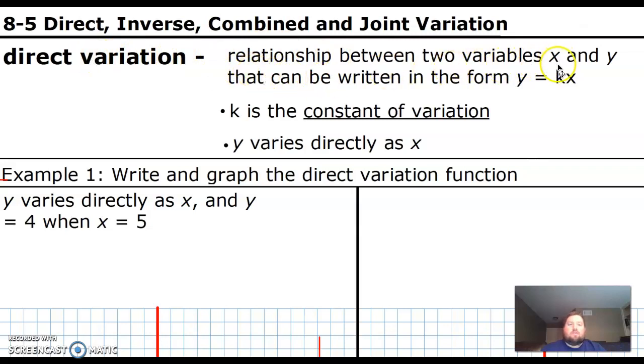So direct variation is a relationship between two variables that can be written in the form y equals kx. That equation is very important. We'll be using that a lot. K is a constant, called the constant of variation. So that will be an actual number when we do a real problem. The words you'll see in the problem are y varies directly as x. So the thing before the equal sign, it's not always x and y. They might use different letters. The letter before the equal sign will be before the word varies, and the letter after the equal sign will be after all the rest.